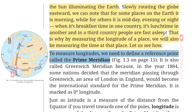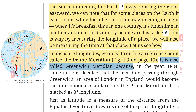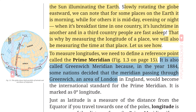To measure longitudes, we need to define a reference point called the prime meridian (figure 1.3, page 15). It is also called the Greenwich Meridian, because in the year 1884, some nations decided that the meridian passing through Greenwich — an area of London in England — would become the international standard for the prime meridian. It is marked as 0° longitude.